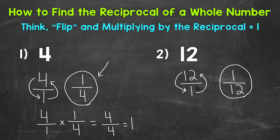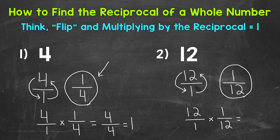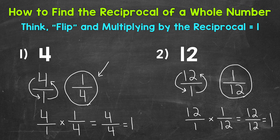Let's multiply 12 by 1 twelfth to show that we get 1. So 12 in fractional form, 12 over 1, times 1 twelfth, the reciprocal. Multiply straight across. Numerators: 12 times 1 is 12. Denominators: 1 times 12 is 12. Same numerator, same denominator — that equals 1. So that shows that the number times its reciprocal equals 1. The reciprocal of 12 is 1 twelfth.